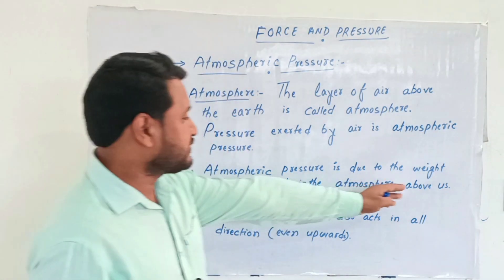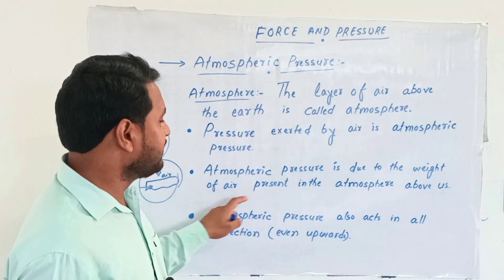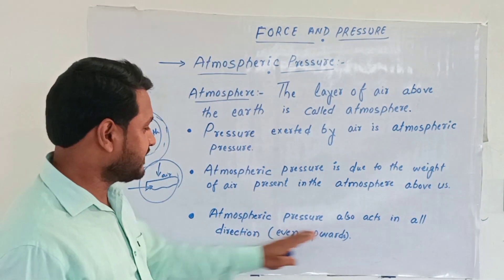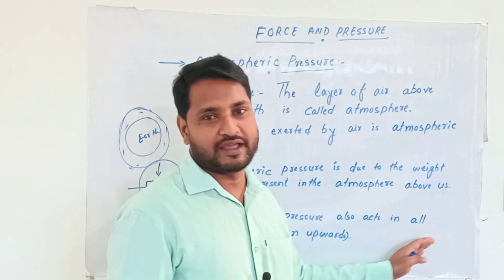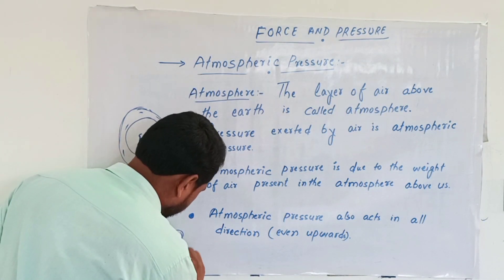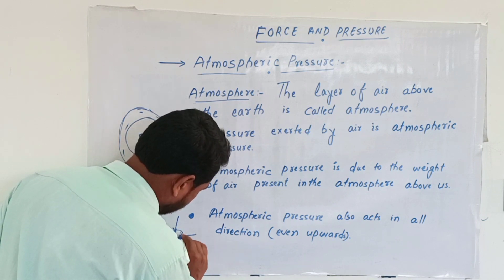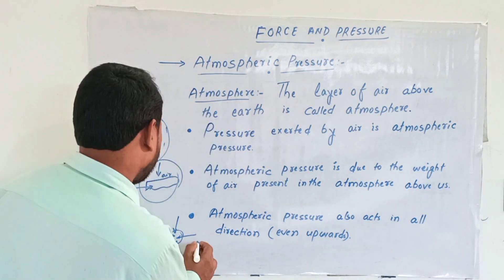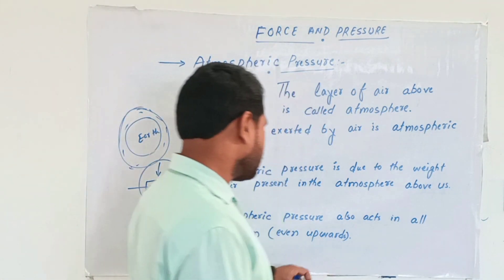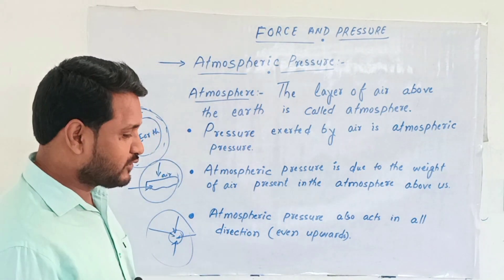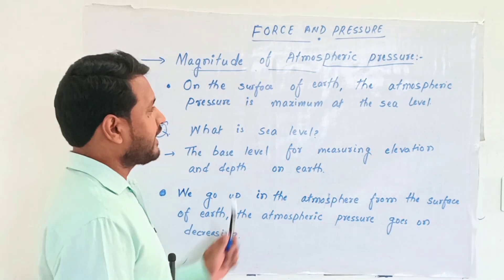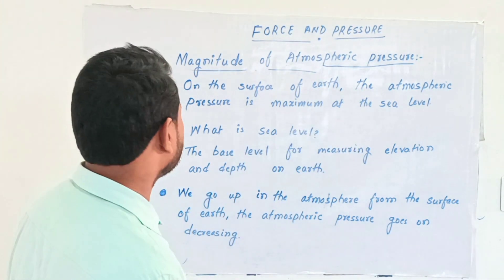Atmospheric pressure is due to the weight of air present in the atmosphere above us. Next point: atmospheric pressure also acts in all directions. Like this is the object — atmospheric pressure applies on this object in all directions, even upwards. Next, we will discuss the magnitude of atmospheric pressure.